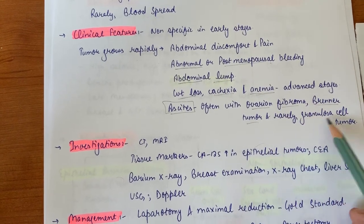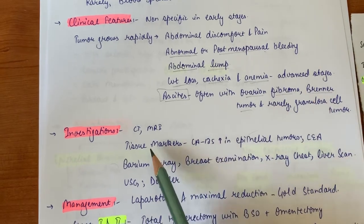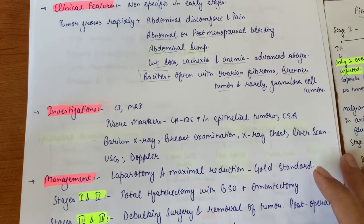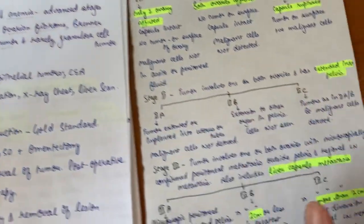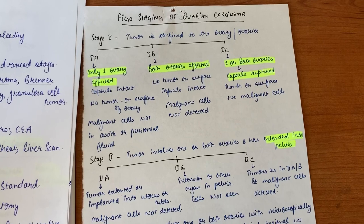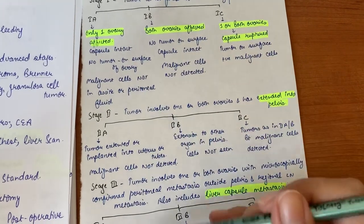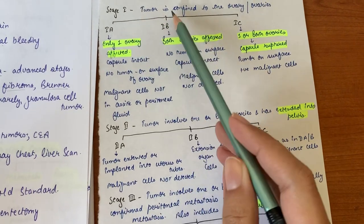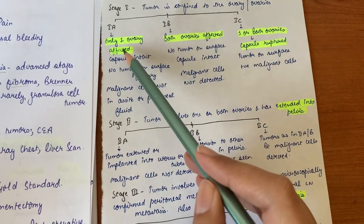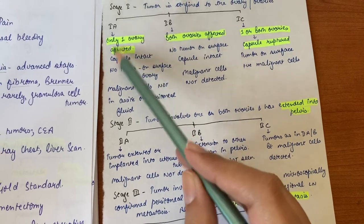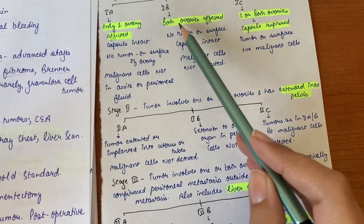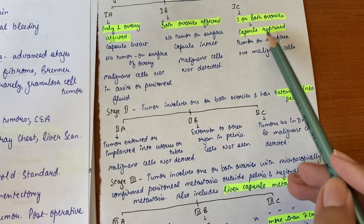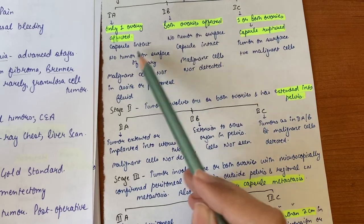For staging, we have a classification system called FIGO staging. According to this classification system, this carcinoma is divided into four stages. In stage one, we have further 1a, 1b, and 1c. In stage one, the tumor is confined to one or both ovaries. The difference is that in 1a only one ovary is affected, in 1b both ovaries are affected, and in 1c one or both ovaries are affected but their capsule is ruptured, whereas in 1a and 1b the capsule is intact.